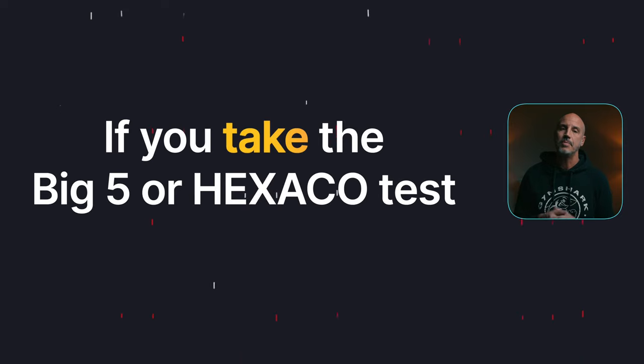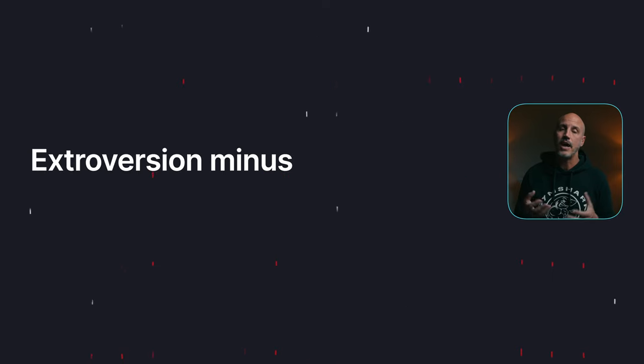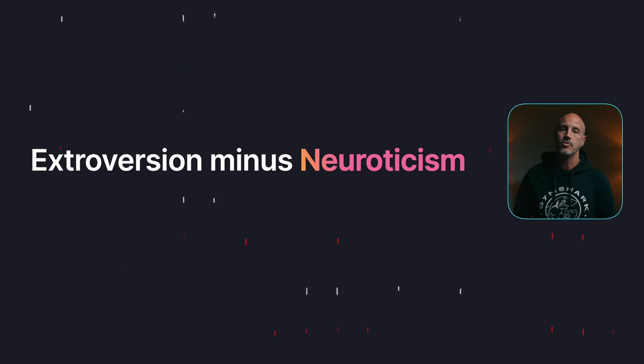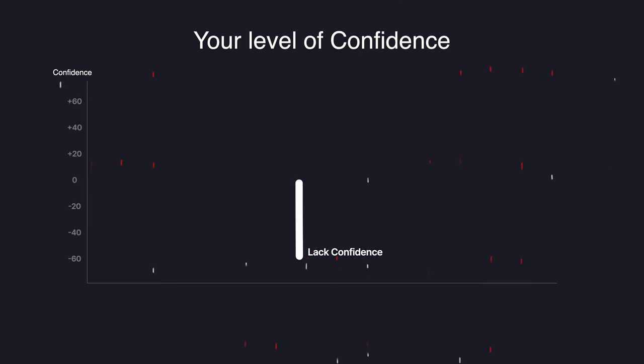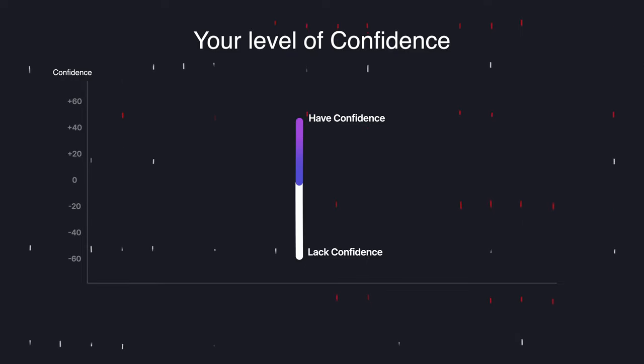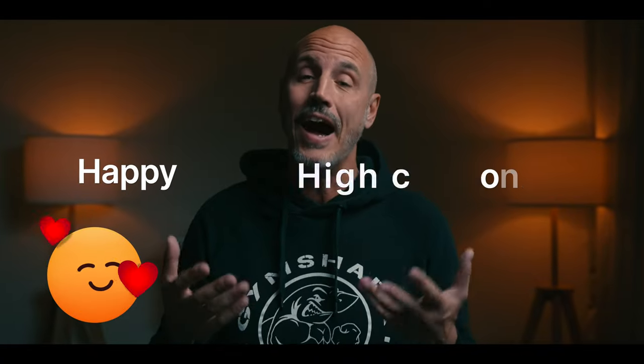What use is this knowledge? If you take the Big Five or the hexagonal test, you will have an extroversion value and a neuroticism value. If you subtract the neuroticism or emotionality value from your extroversion value, you will end up with a value of your confidence. If it is a negative value, you do not have confidence in yourself; if it is a positive value, you have confidence. You can see this shift in yourself depending on your emotions — if you are sad you have low confidence, and if you are happy you have high confidence.